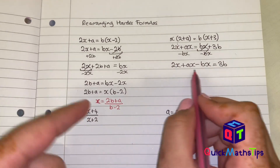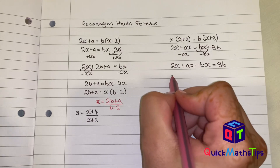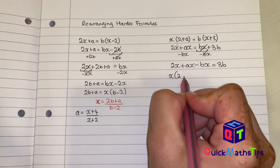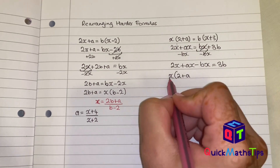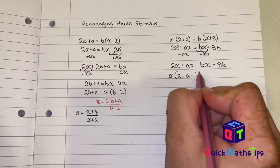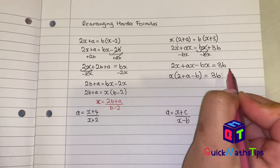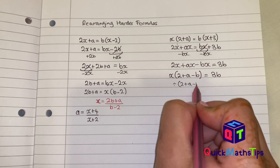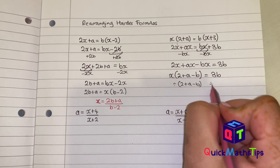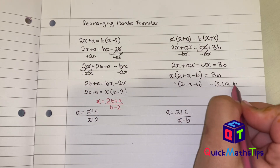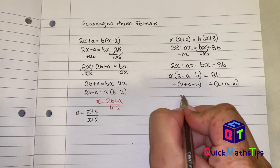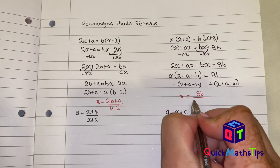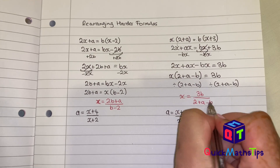Everything that has x in it is on one side of the equation, so I can factorize by x: x bracket 2 plus a minus b equals 3b. Now I can divide by the bracket 2 plus a minus b, because x is being multiplied by it, and my final answer is x equals 3b divided by 2 plus a minus b.